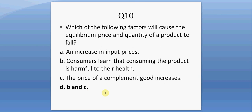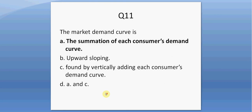Moving on to question eleven. The market demand is A, the summation of each consumer's demand curve — that is correct, and it is the only correct answer choice. C would be correct if we put in the word 'horizontally.' That's technically how you find a market demand curve, by horizontally summing each individual consumer's demand curve.